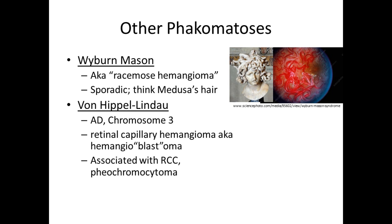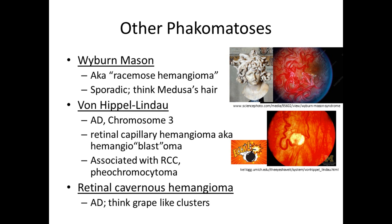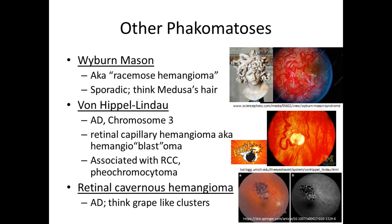Von Hippel-Lindau is associated with renal cell carcinoma (RCC — three letters), pheochromocytoma, and cerebellar hemangioblastomas, so it's important to get an MRI on these patients. Also get an MRI for Wyburn-Mason due to possible vascular malformations. With von Hippel-Lindau, you'll see retinal capillary hemangiomas, also known as hemangioblastomas. Last is retinal cavernous hemangioma — autosomal dominant — just think of a grape-like cluster. This wraps up all the high-yield information on phacomatoses; best of luck!